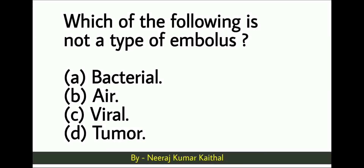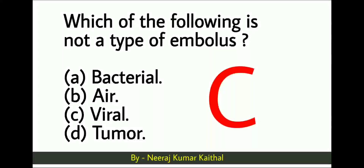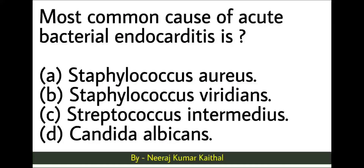Which of the following is not a type of embolus? Option A: bacterial, option B: air, option C: viral, option D: tumor. The right choice is option C: viral. Viruses do not cause the formation of an embolus. The other options — bacterial, air, and tumors — can cause an embolus.